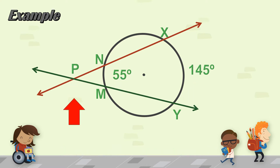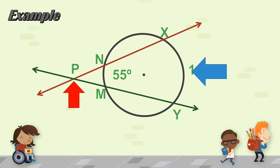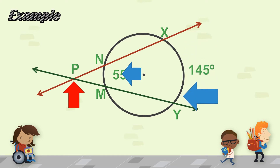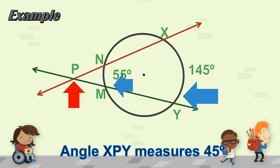Let's go to example number 2 for theorem 1. We would like to find out the measure of angle XPY formed by two secant lines. The two secant lines formed two arcs: arc XY, the bigger arc, and the smaller arc MN. So what we do is subtract the bigger arc — 145 degrees — minus the smaller arc — 55 degrees — then divide by two. So the measure of angle XPY is 45 degrees.